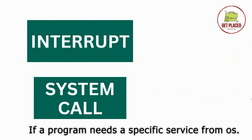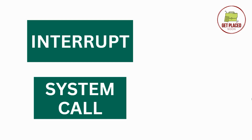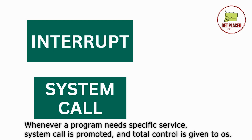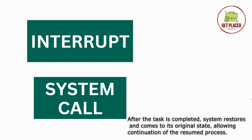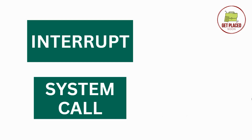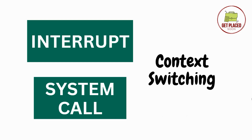We also have system calls. For example, if a program needs a specific service from the operating system, it makes a system call. We have discussed system calls in our previous videos — how the user mode converts to kernel mode and so on. Whenever a program needs a specific service, the system call is triggered and total control is given to the operating system. After that task is completed, the system restores and comes to its original state, allowing continuation of the resumed process. Therefore, interrupts and system calls trigger context switching, ensuring efficient handling of different tasks.